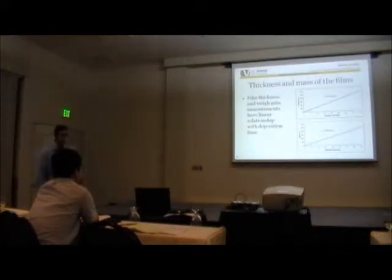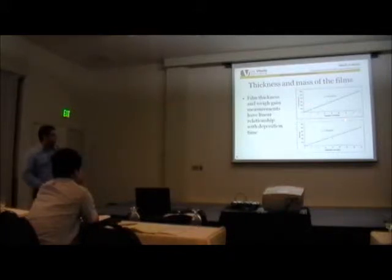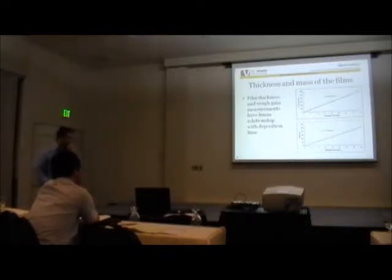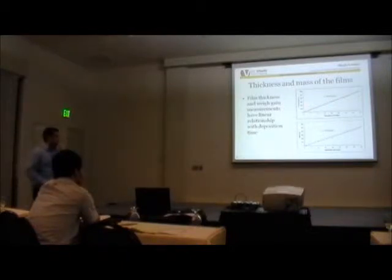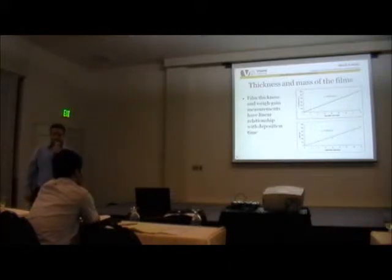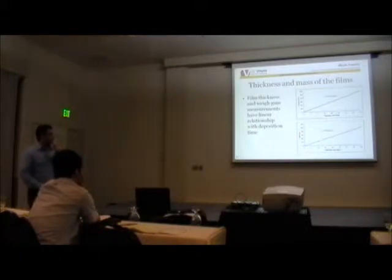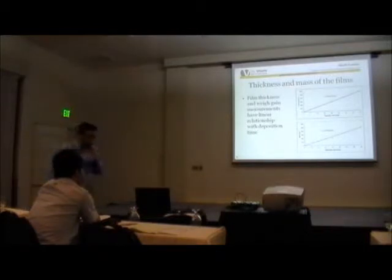After measuring the thicknesses and the mass of those films, I got this relation between the thickness and the deposition time, and this is the mass versus deposition time. This is a very useful graph since we know the deposition rate. For instance, if we want to deposit 250 nanometers of 40% iridium mixed with 60% platinum, we know that roughly about 16 minutes of deposition will give us a very controlled thickness film.